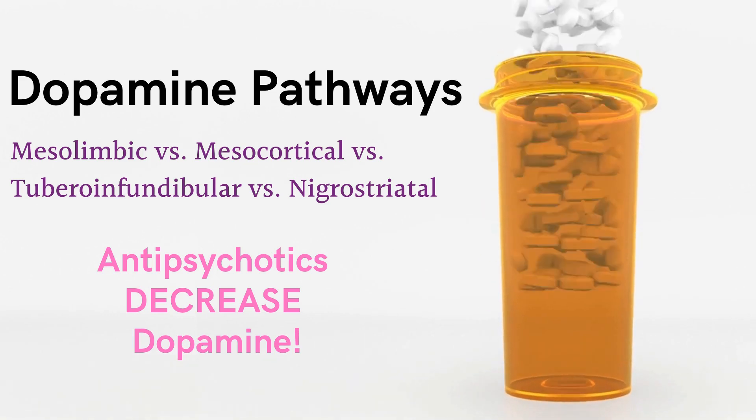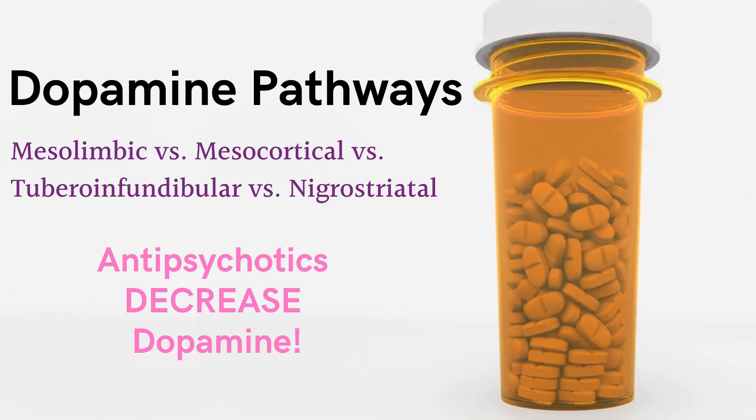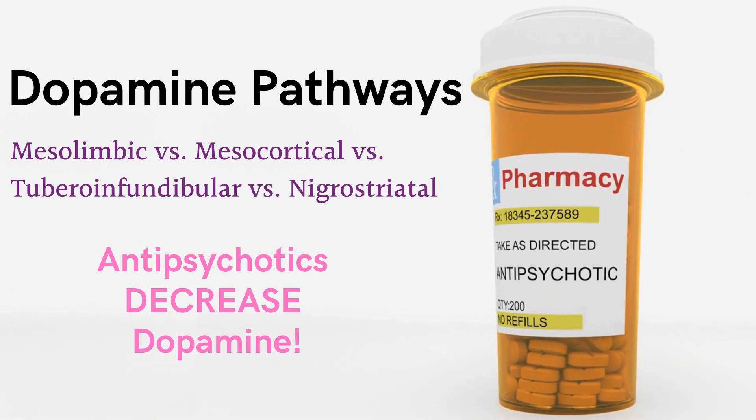Welcome! In today's video, I'll go over the four dopamine pathways: mesolimbic, mesocortical, tuberoinfundibular, and last but not least, nigrostriatal pathway. When we give antipsychotics to patients, it decreases the dopamine. And when we decrease the dopamine, it affects all of the pathways.